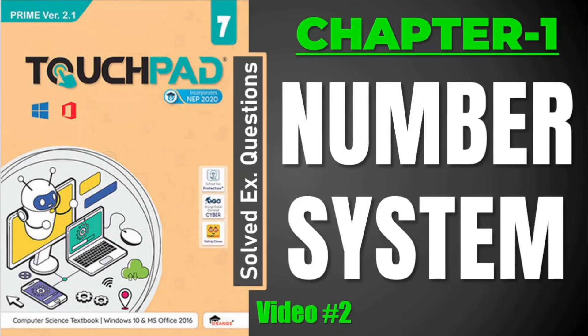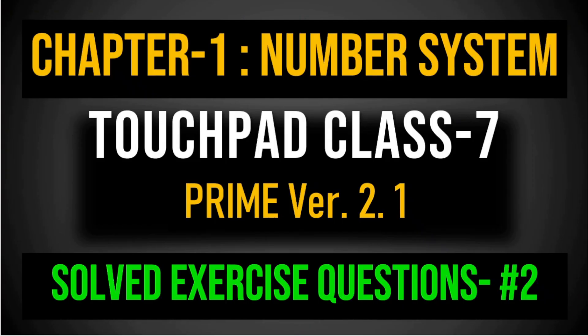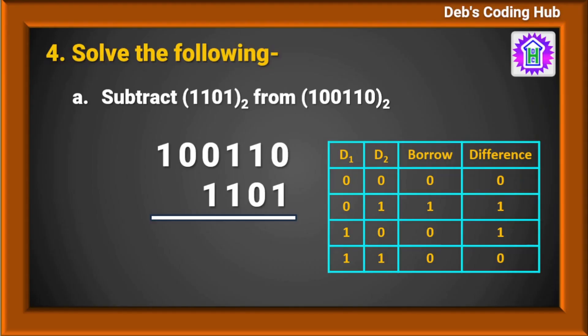Hello, dear students of class 7. Today we are going to solve question number 4 of chapter 1, which is Number System. Let's jump into question number 4: subtract 1101 from 100110. It is binary subtraction. Let us see the table of binary subtraction. This is digit 1, this is digit 2, this is borrow, and this is difference.